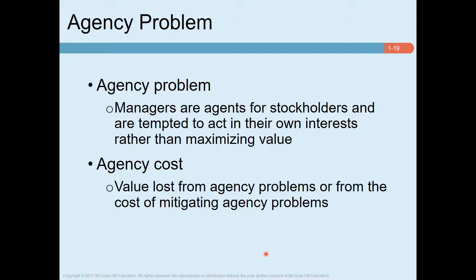Agency problem also leads to agency costs. There are two types of agency costs. For example, managers do not attempt to maximize firm value — like managers simply did not take the project that is in the best interest of the shareholders. Or, due to agency costs, shareholders may also incur additional expenditure to monitor managers and to constrain their actions.